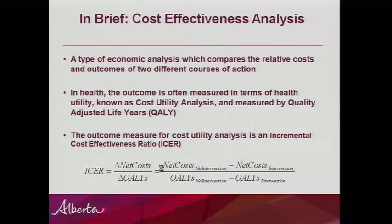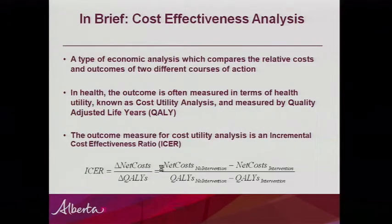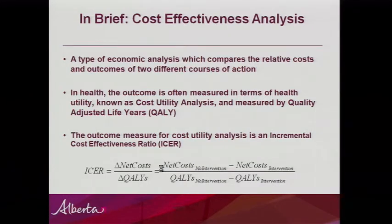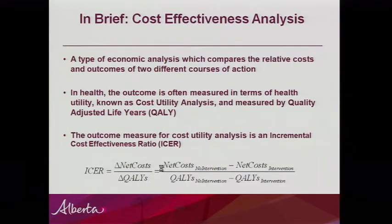The common outcome measure for cost-effectiveness or cost utility analysis is the incremental cost-effectiveness ratio (ICER). This ratio takes the net costs over the net qualities between any two interventions. For HPV, comparing a scenario with no immunization to one introducing female immunization, we're looking at the net costs of no intervention — how much it cost to treat people for HPV — compared to the net costs with an intervention, including program costs and long-term treatment avoided. The denominator reflects the change in quality-adjusted life years, which should be positive if the program benefits people.